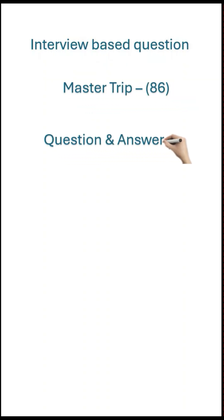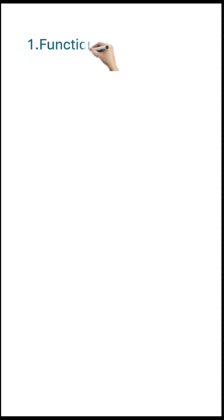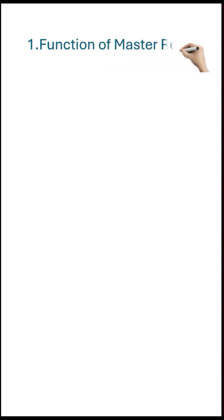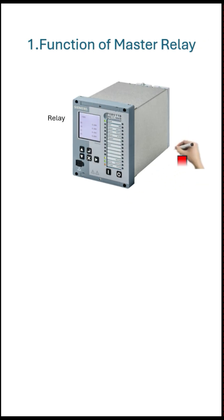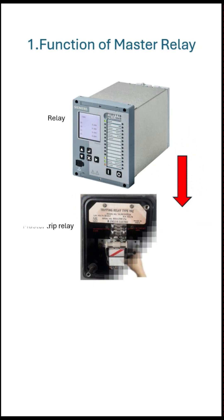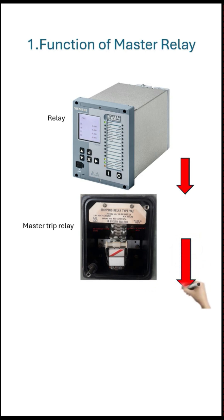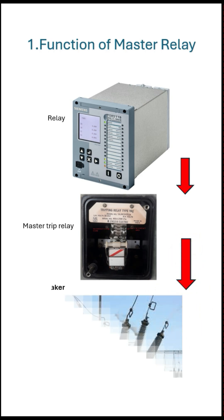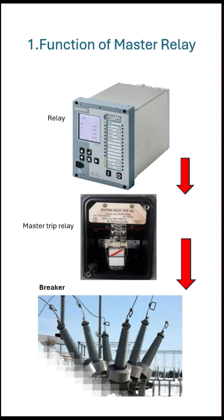The first question: the function of master relay, or what is master relay? A master trip relay works by receiving signals from multiple protection relays or external trip inputs. It collects all the tripping signals from the panel side and gives a single output command to the circuit breaker for each tripping coil.